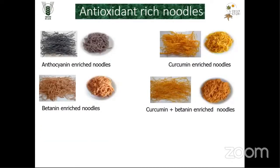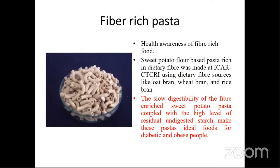We also developed antioxidant-rich noodles in natural colors from major and minor tropical tuber crops. Some anthocyanin-rich yam varieties were used to develop noodles — shown here as raw and cooked. One of our tuber crops is also rich in curcumin, and we have developed noodles from it. Curcumin-betanine combination noodles were also developed. Fiber-rich pasta was also developed from sweet potato, which is good for obese and diabetic patients. The slow digestibility of fiber in this pasta, coupled with high levels of resistant and undigested starch, makes it ideal for diabetic and obese patients.